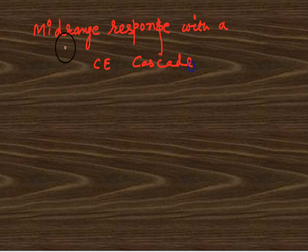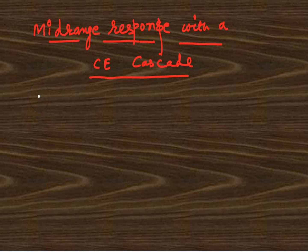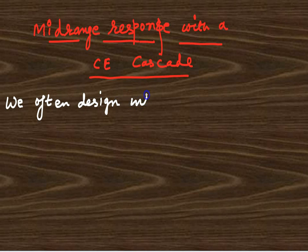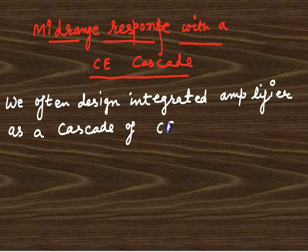Mid-range response with common emitter cascade circuit. Now we are having different frequency components: low frequencies, mid frequencies, and high frequencies. This article is related with what is the response of the common emitter amplifier and common emitter cascade circuits to the mid frequencies.